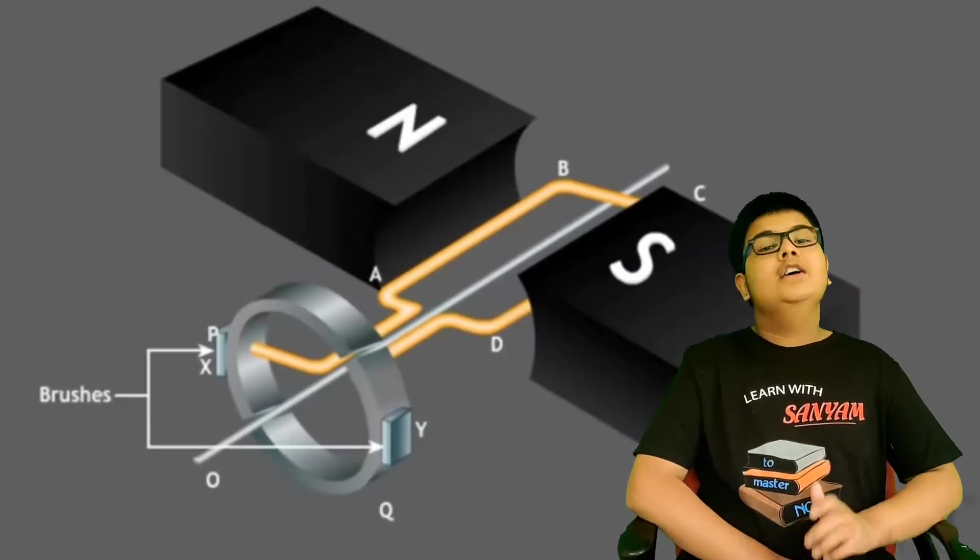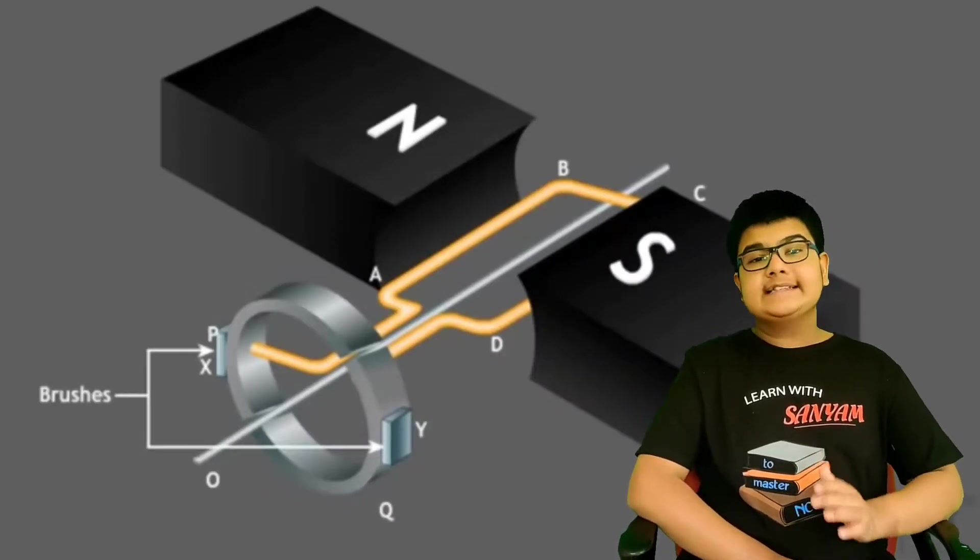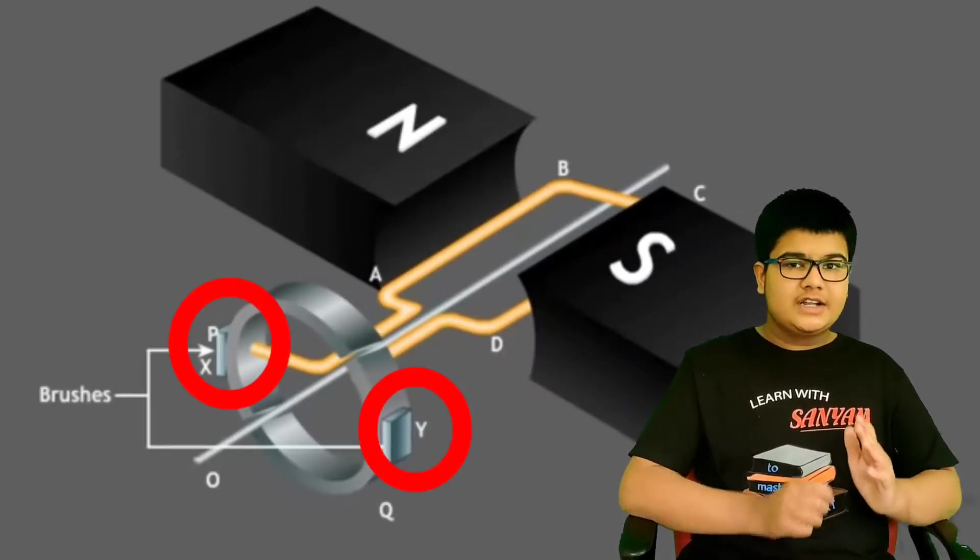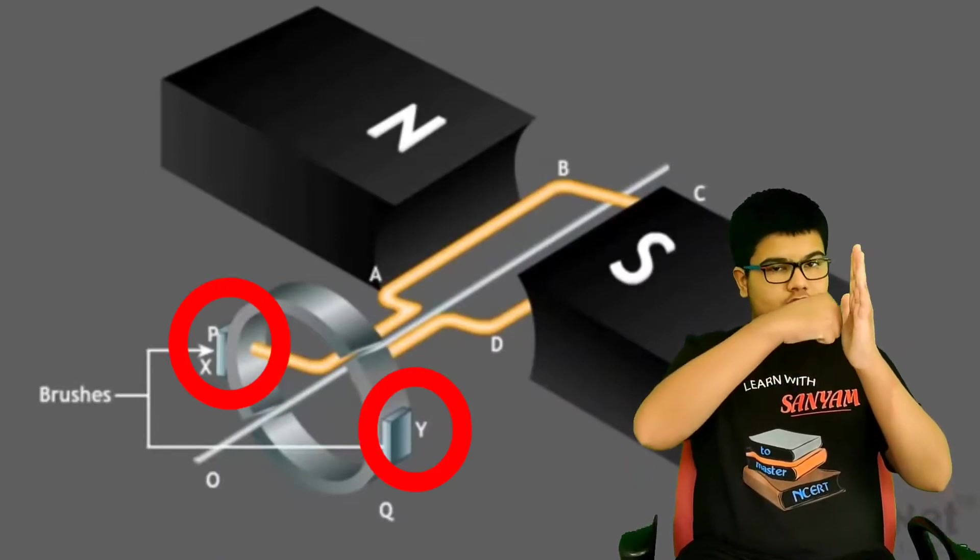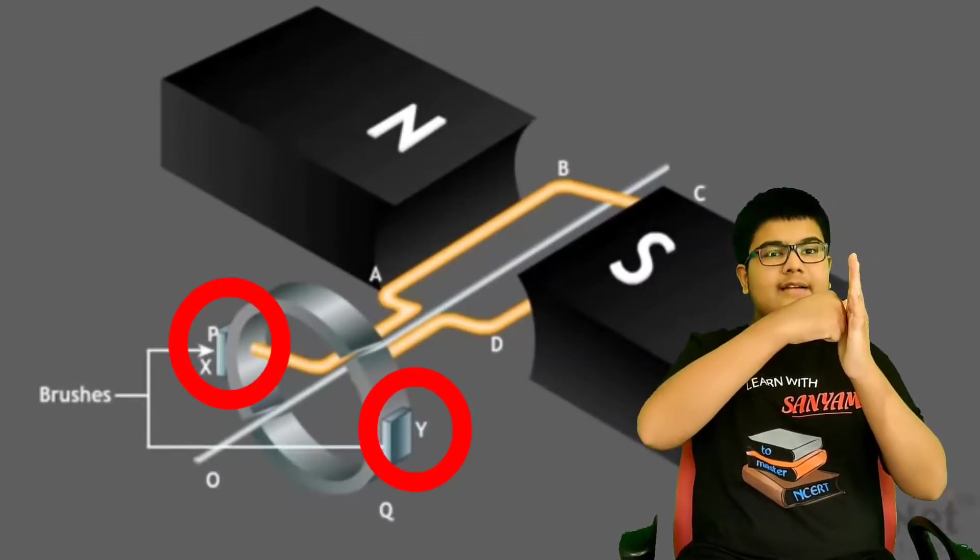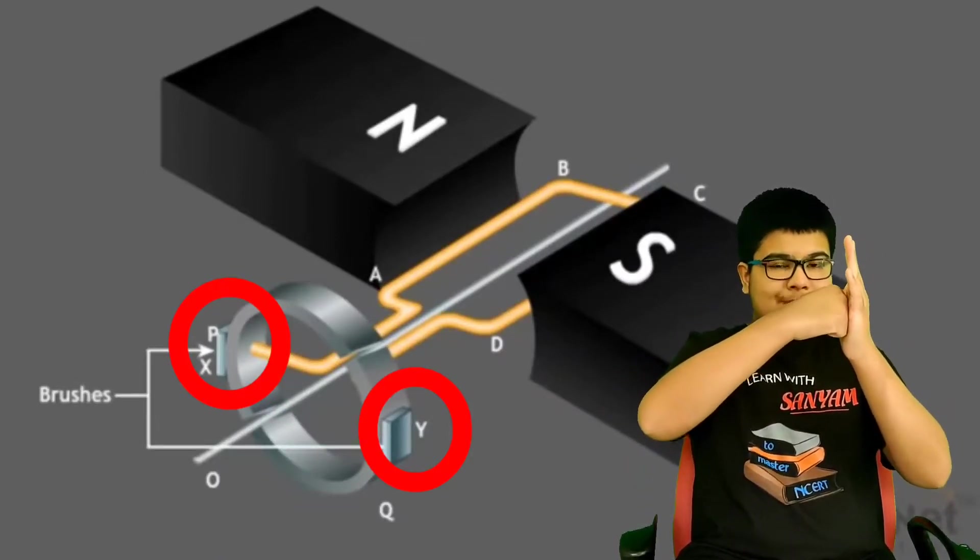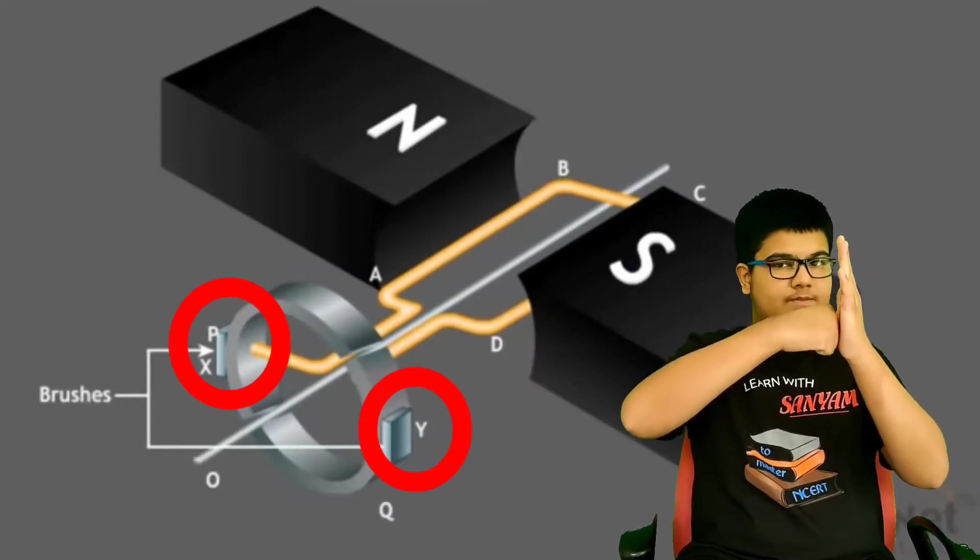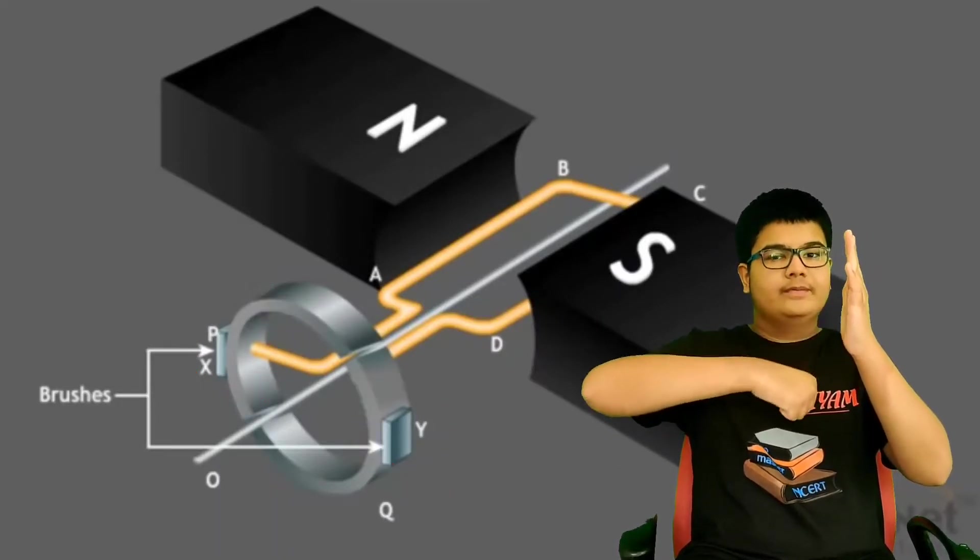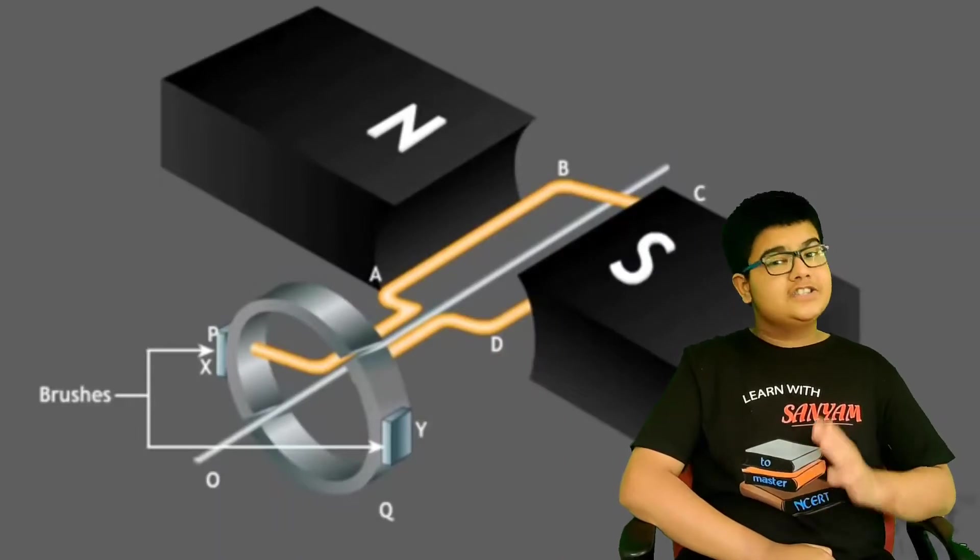Fourth, brushes. There are two brushes X and Y which just touch the split rings. Consider that this is a split ring and this is a brush. Split ring is just touching the brush. And split ring can move, but brushes are stationary.